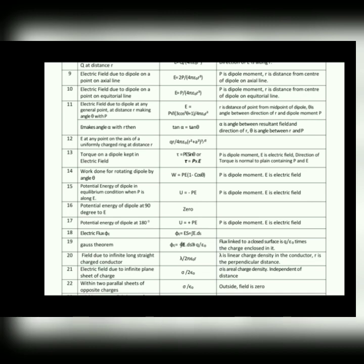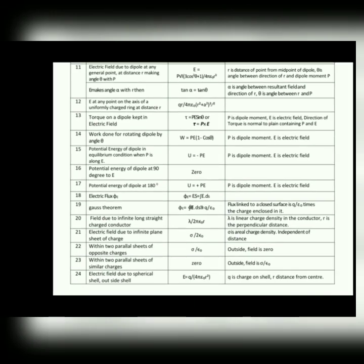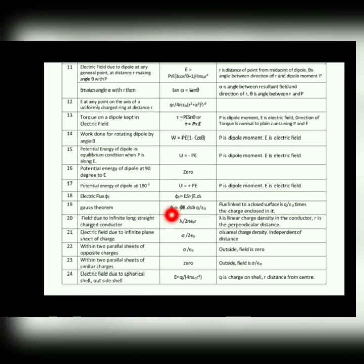Electric flux concept: Φ = E·A·cosθ, and removing cosθ gives the dot product Φ = E·S — electric field dot area vector. Then Gauss theorem: Φ = ∮E·dS = Q_enclosed/ε₀. This is the basic statement of Gauss theorem and its mathematical form.